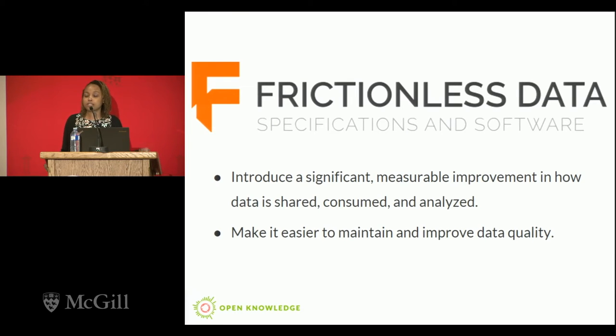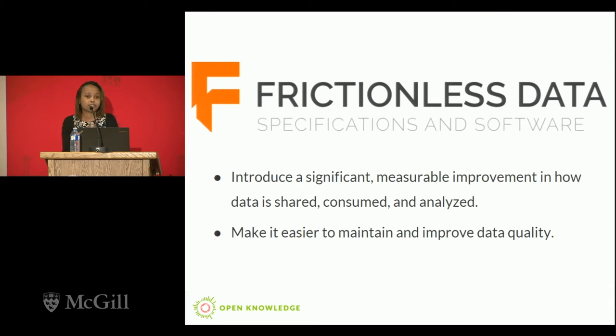The first way is we have a set of specifications that are very lightweight and adaptable for use in any domain. This is the key difference between our specifications and existing standards — frictionless data does not develop standards, we write specifications, which are one level below standards. You can use them as a building block: take the specifications, say you want to attach metadata to your data easily before publishing it, take the data package specification, use that, and then build a standard around it specific to your domain. By being domain agnostic, it allows us to work with as many people in as many different domains as possible.